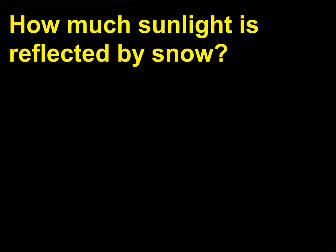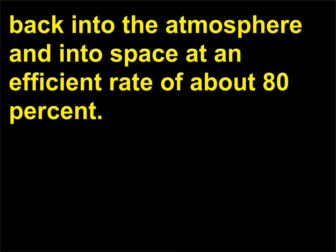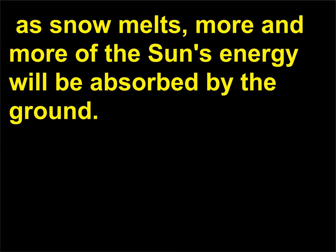How much sunlight is reflected by snow? Since white reflects light, it should be no surprise that snow cover bounces sunlight back into the atmosphere and into space at an efficient rate of about 80%. Environmentalists speculate that global warming may be accelerated further because, as snow melts, more and more of the sun's energy will be absorbed by the ground.